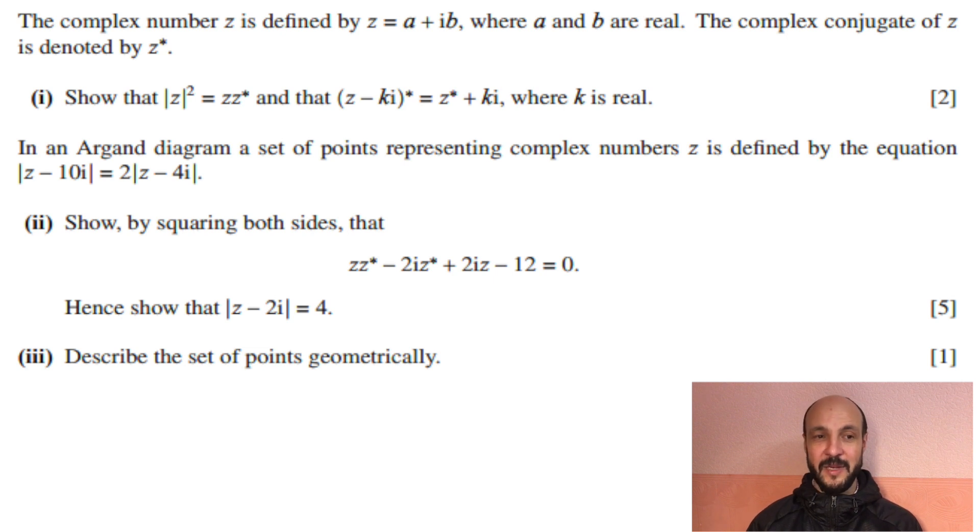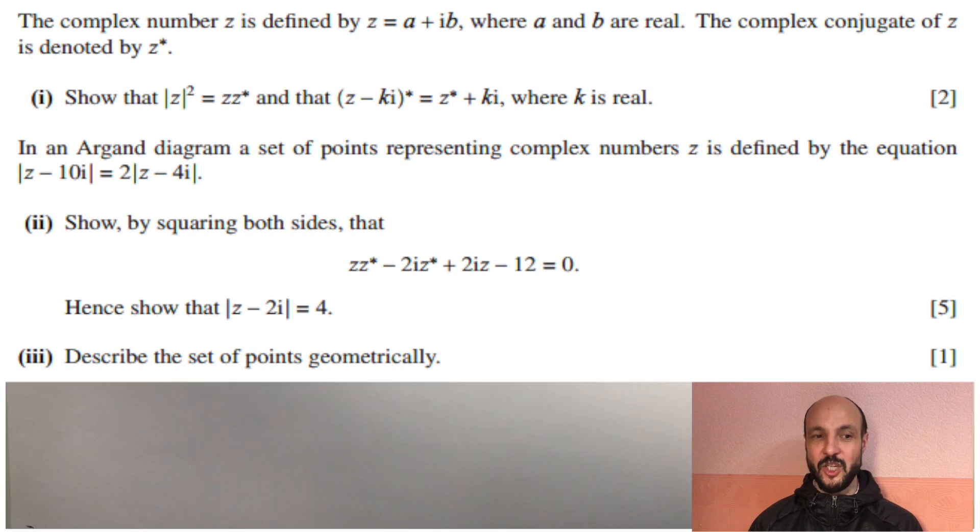In an Argand diagram, a set of points representing complex numbers z is defined by the equation mod of z minus 10i is equal to 2 times the mod of z minus 4i. Part (ii): Show, by squaring both sides, that zz star minus 2iz star plus 2iz minus 12 equals 0. Hence, show that the mod of z minus 2i equals 4. Part (iii): Describe the set of points geometrically.